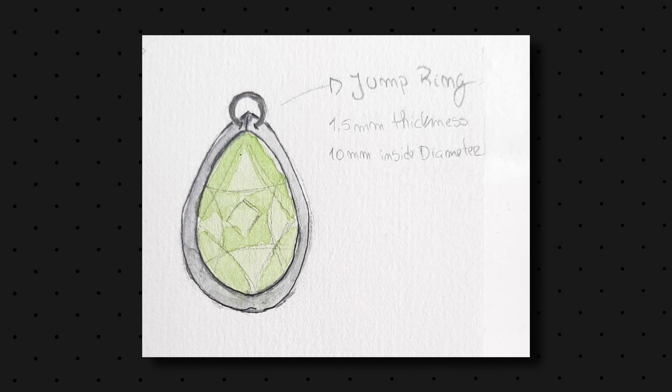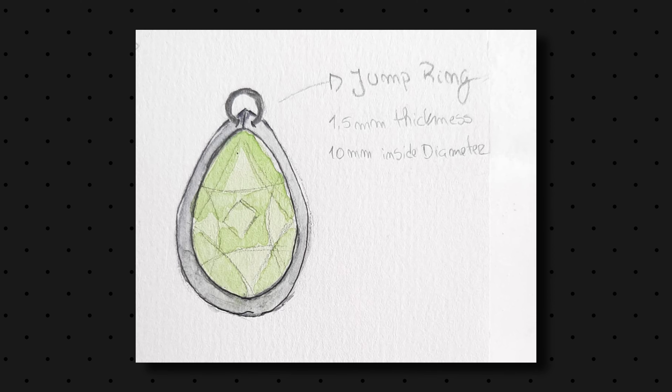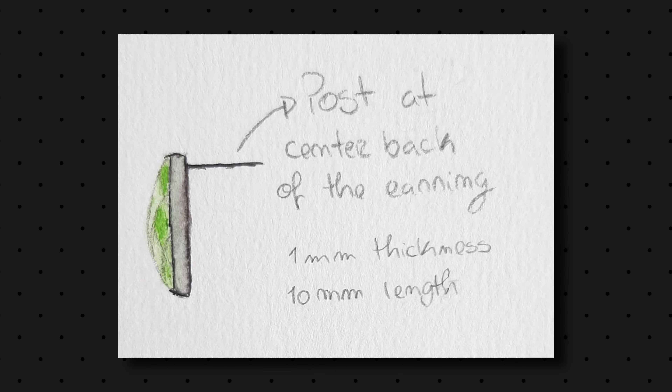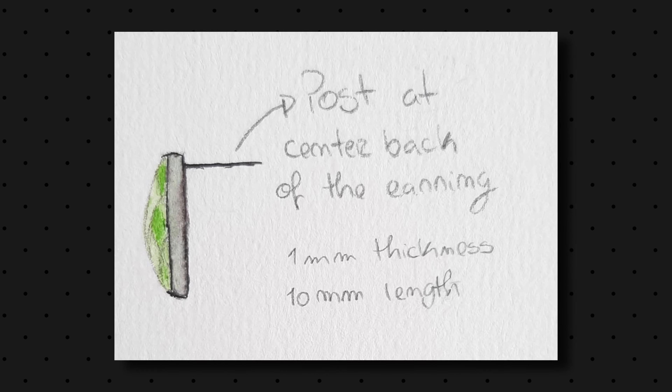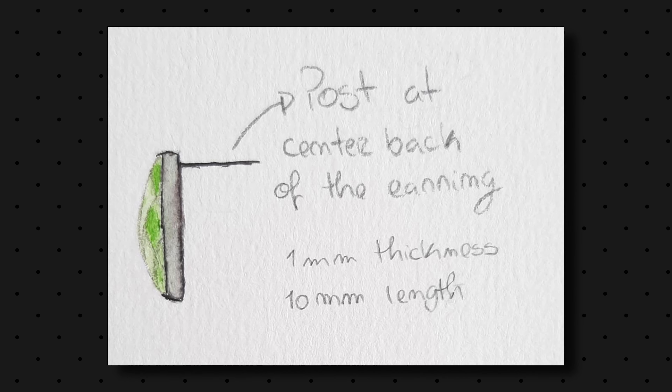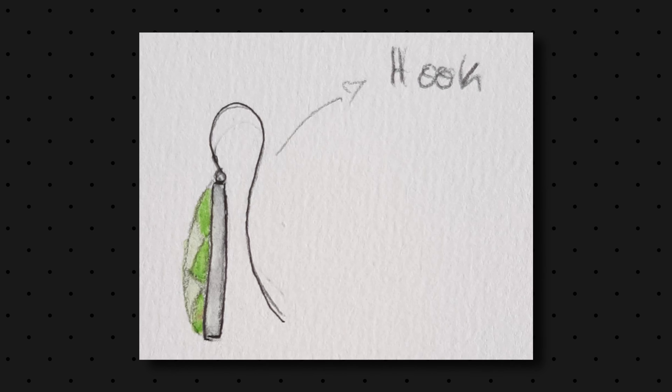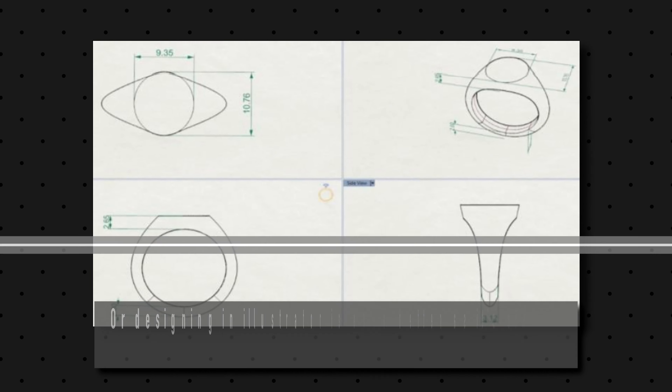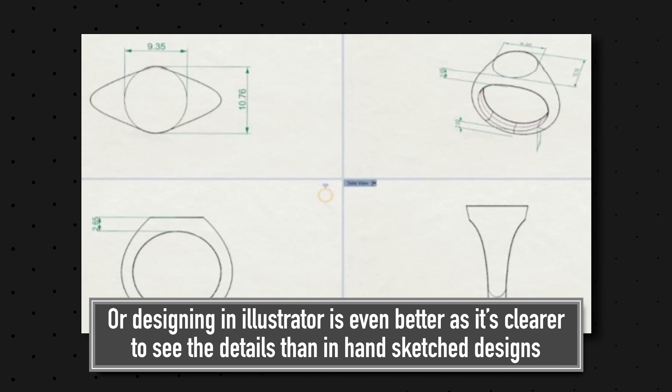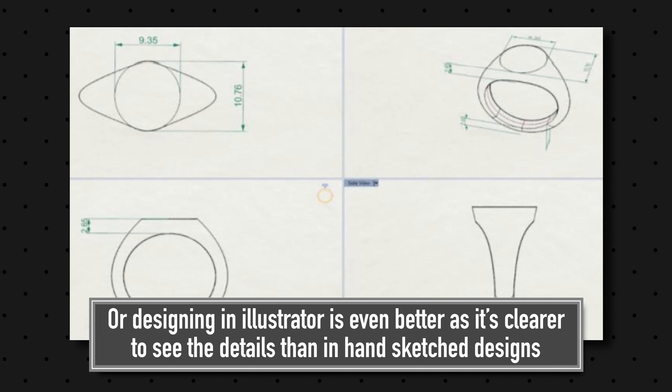Also, try to envision what it looks like as a jewelry piece. I've had customers send me sketches and I can't figure out if it's a pendant or an earring. If it's a pendant, illustrate where you want the bail or the jump ring to be on the piece. If it's a stud earring or a drop earring, show where you want the post to be at the back, or where you want it to hang if it's going to be a hook earring. All this information will really help the CAD designer and therefore the manufacturer when it comes to producing the samples.